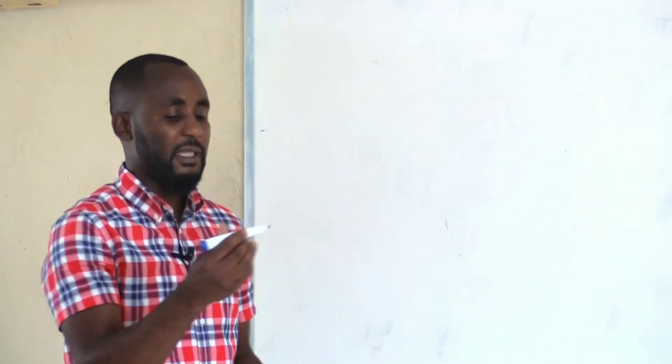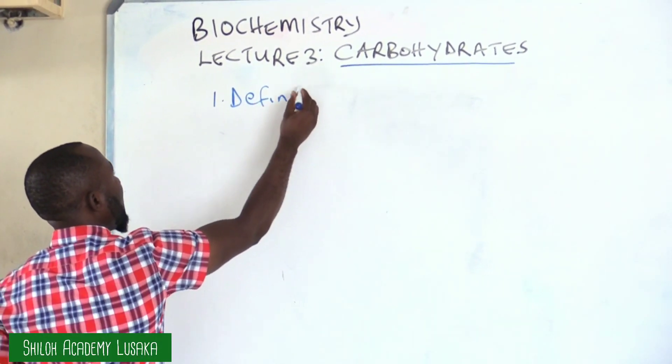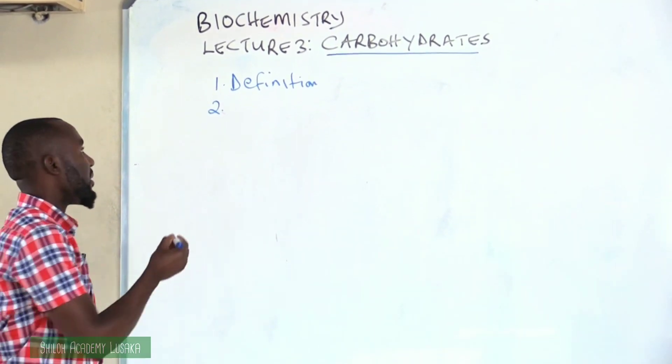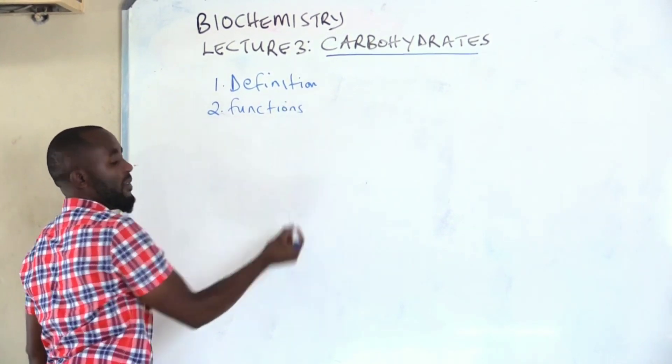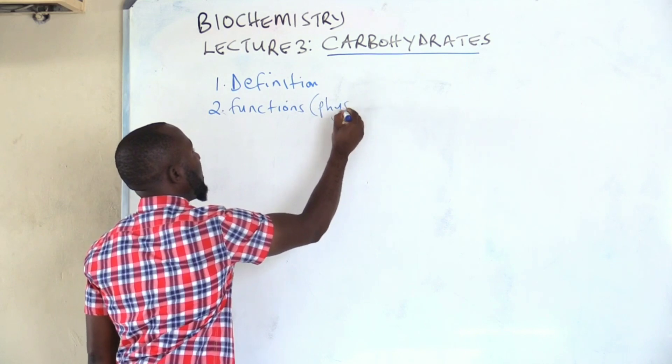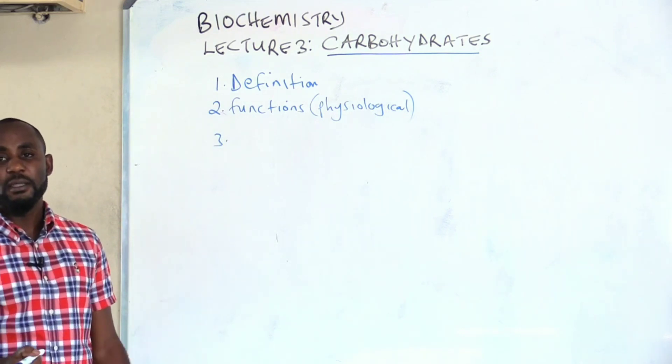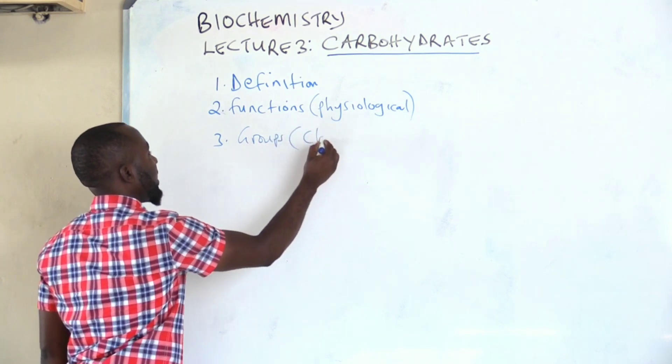Today we want to go to one of the most important biomolecules, and that is carbohydrates. The first thing we shall do is try and understand the definition of a carbohydrate. After we understand the definition, we shall go to the functions of carbohydrates—by functions we mean physiological functions in the human body. After we cover functions, we shall go to groups or simply classification of carbohydrates.